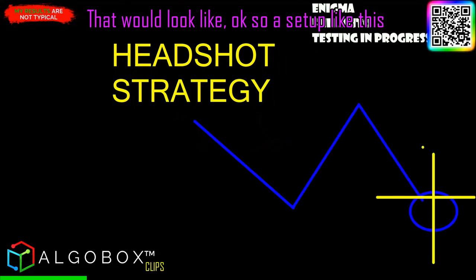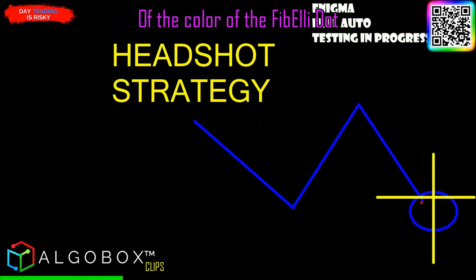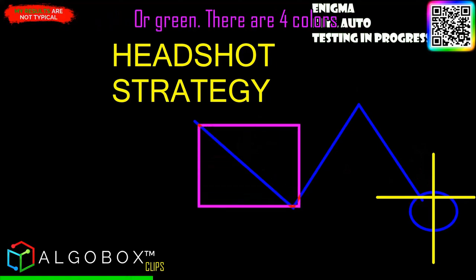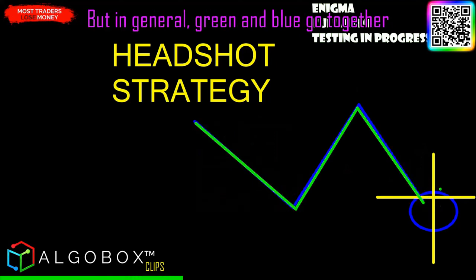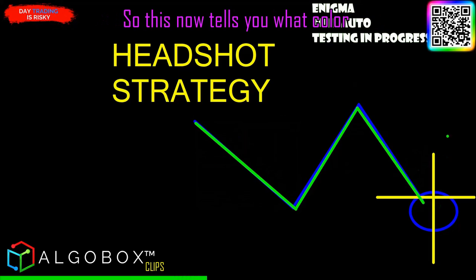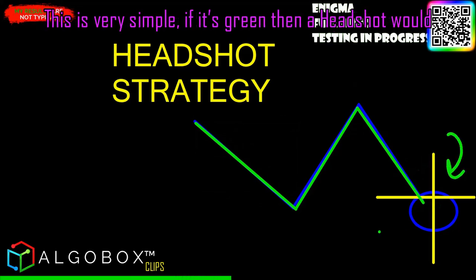A setup like this is interpreted as a long because of the color of the Fabella dot. The Fabella dot can either be blue or green — there are four colors total, but in general green and blue go together, and red and pink go together. This tells you what color cross direction you're looking for.